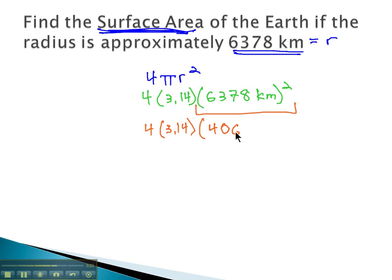We get 4, 0, 6, 7, 8, 8, 8, 4. 40,678,884 kilometers squared, keeping the units on there.